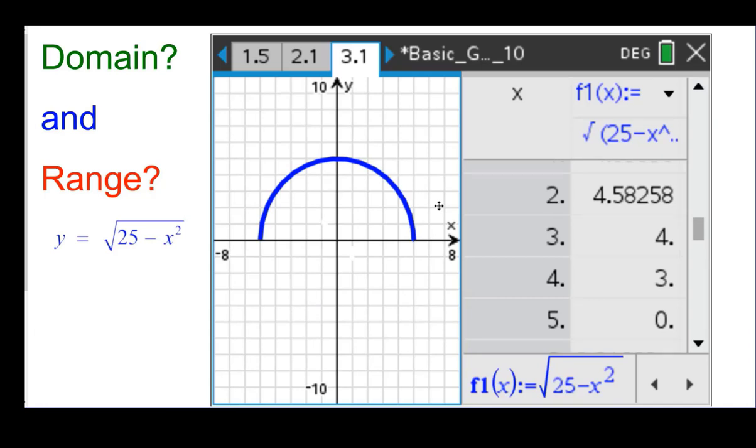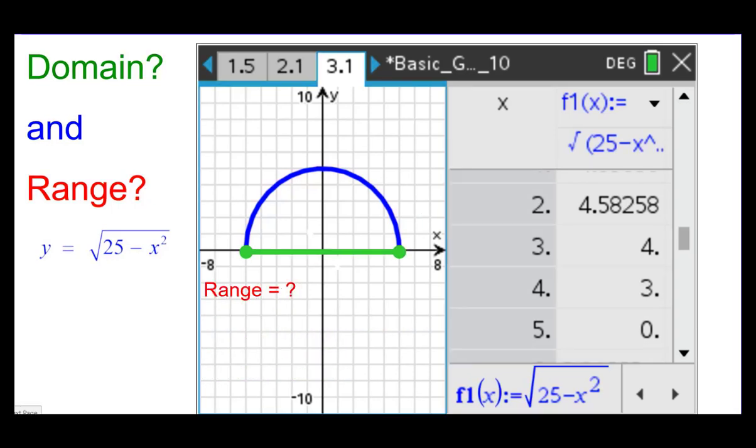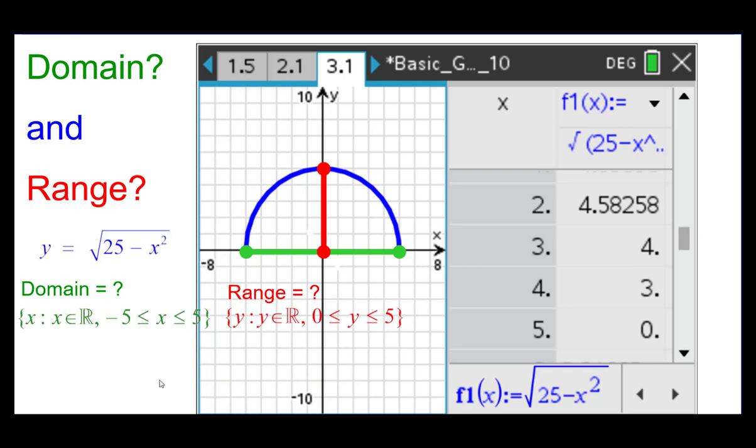So domain and range. We'll go back to y equals the square root of the quantity 25 minus x squared. And you can see that the domain is between 5 and negative 5 inclusive, as we said before. And this is how we would write that with set notation. The range only includes the real numbers 0 through 5 inclusive. And this is how we would write that. And here is the domain and range.